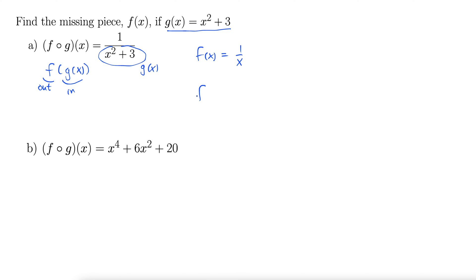Then f(g(x)), also known as f composed with g(x), well now we're putting in all of g(x) into the x here, so that's 1 over (x² + 3).